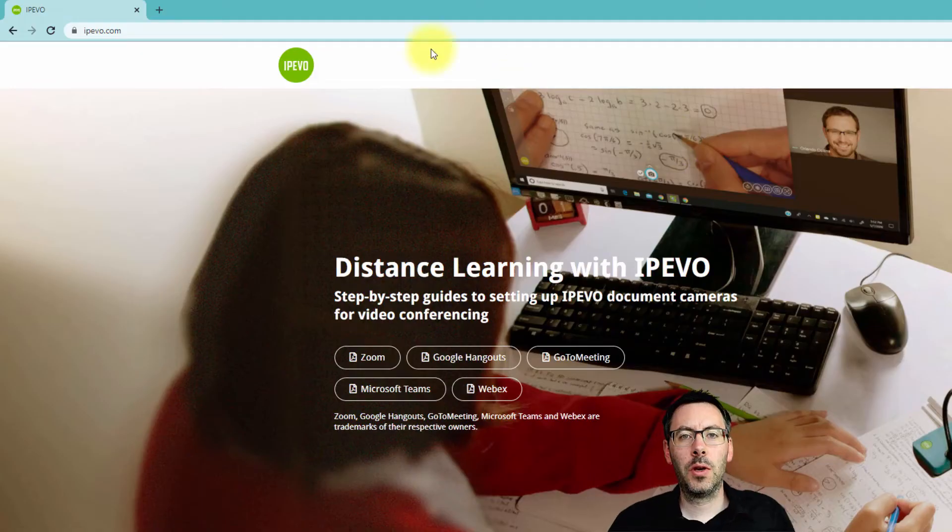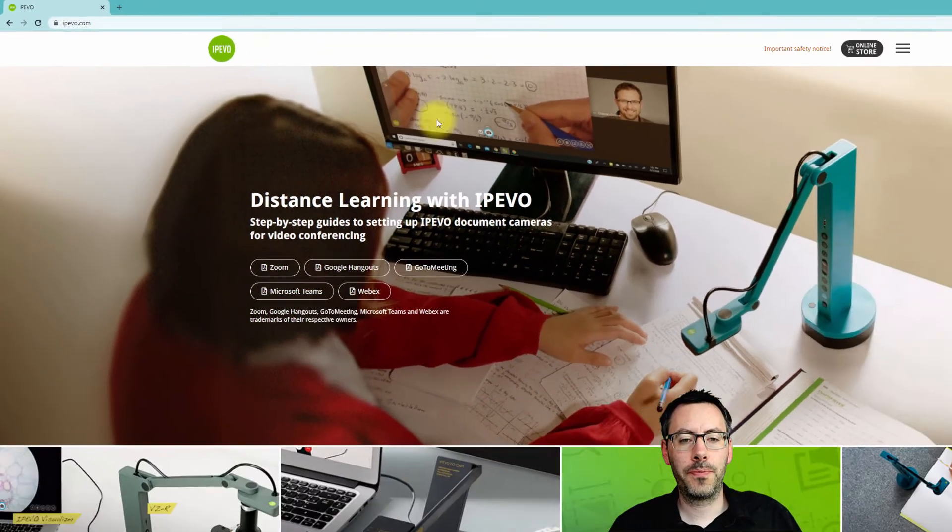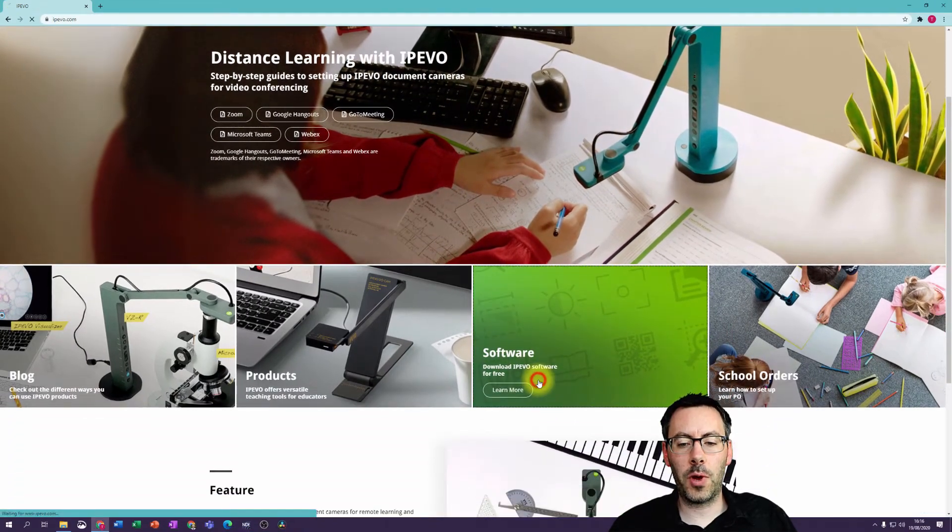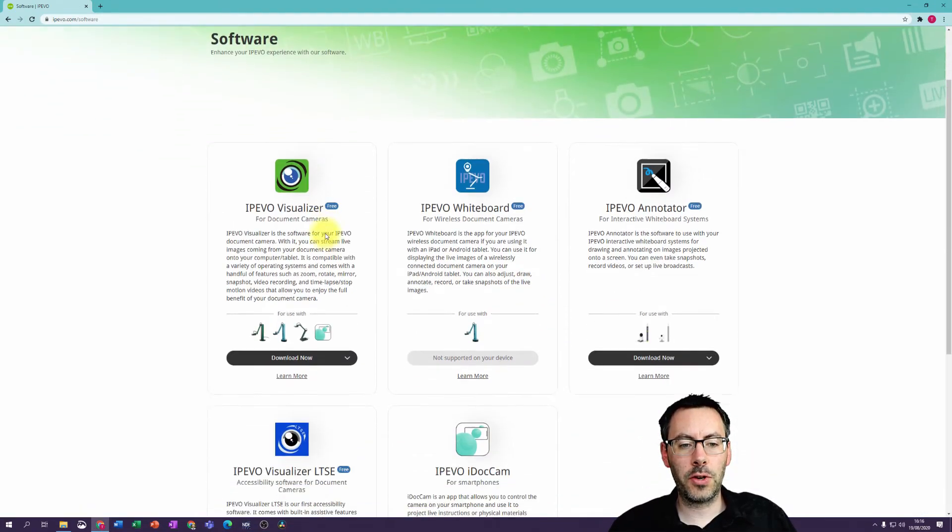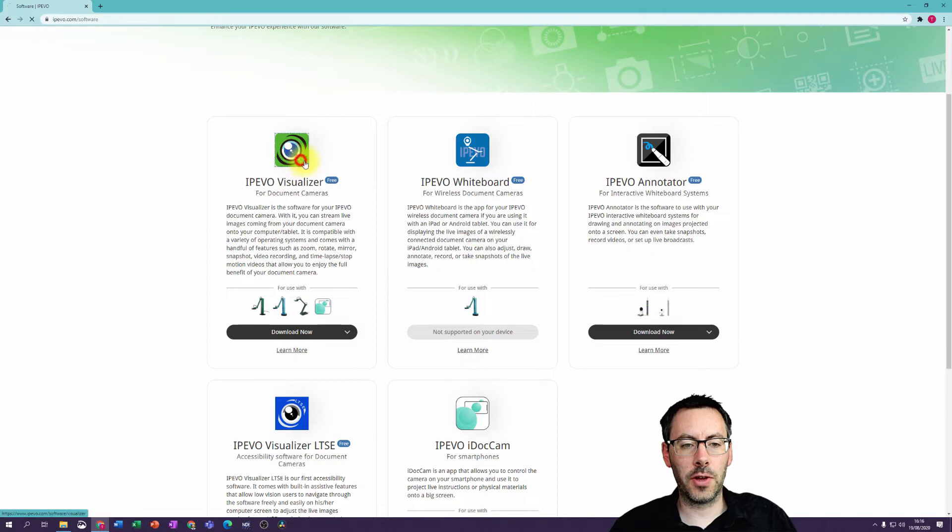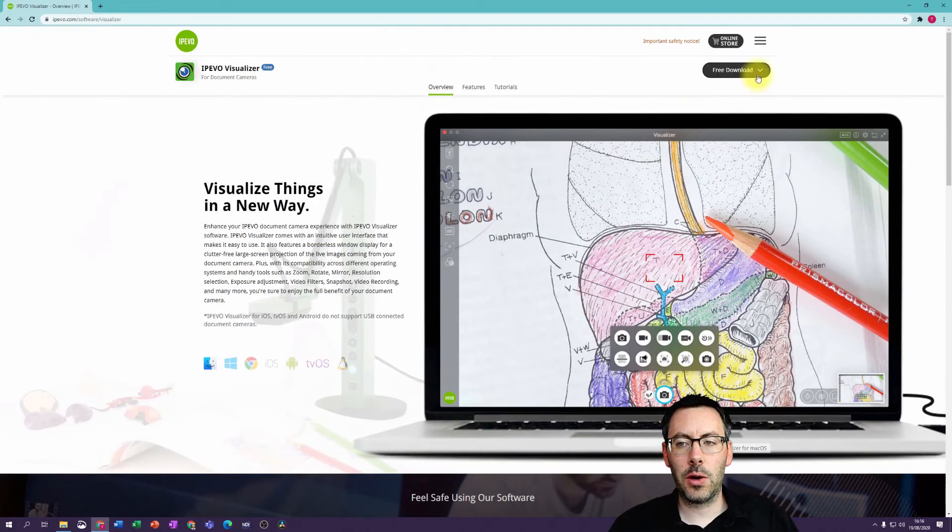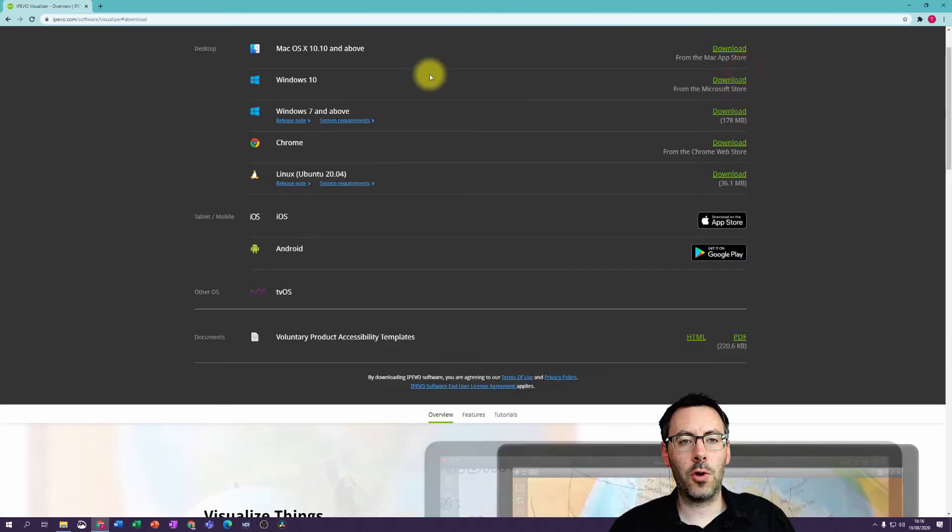Let's start by having a look at where we can get the software from. We need to go to iPivo.com and then to the software page. The software we're interested in today is the iPivo Visualizer. If we click on the free download button at the top, we've got a variety of options.